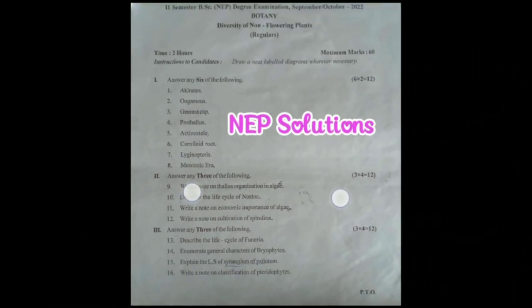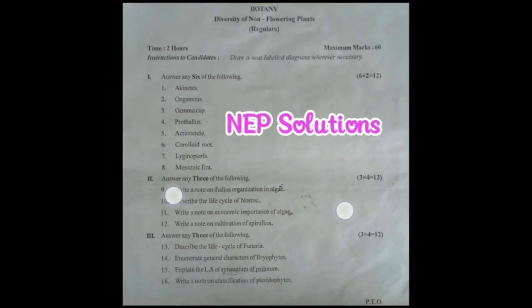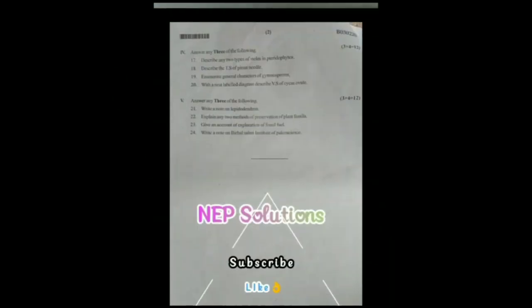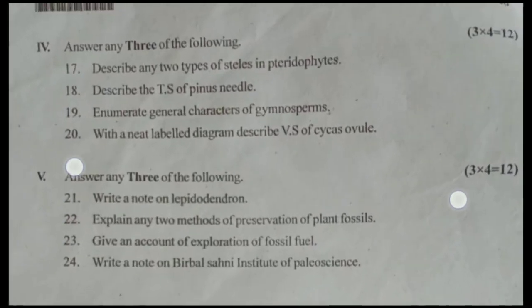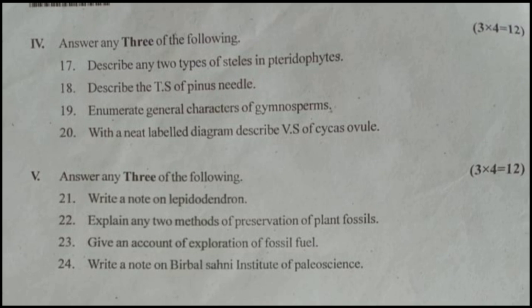This is your botany question paper. Next question, fourth main: Answer any 3 of the following. Seventeenth question: Describe any 2 types of steles in pteridophytes. It is the second question from the pteridophytes.